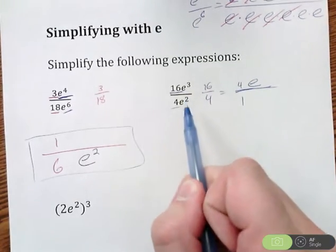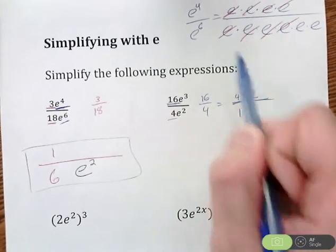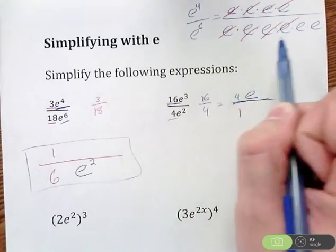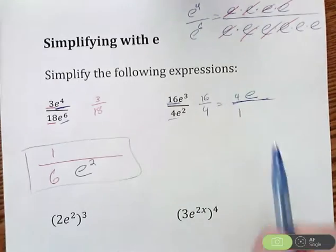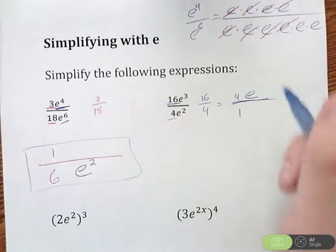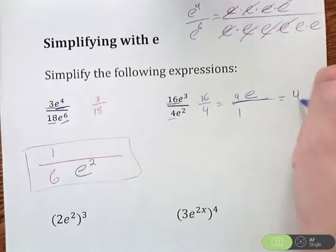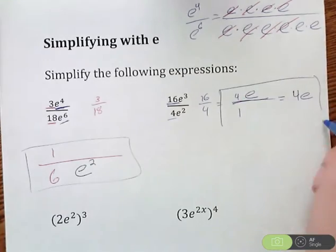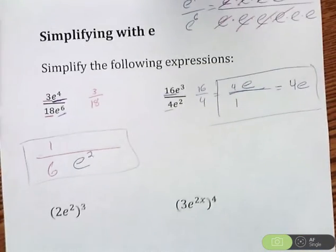If you're not really sure how I did that that quickly, you can write it out if you would like. Write out 3 e's on top, 2 on bottom, cancel 2 on top. You have 1 left. So I have 4e divided by 1, which is the same as 4e. Either of those two answers would be acceptable.